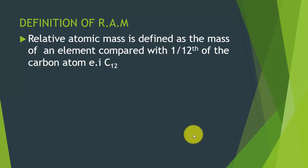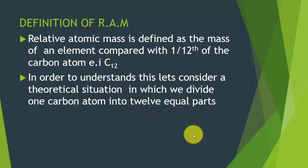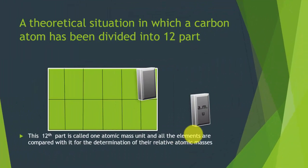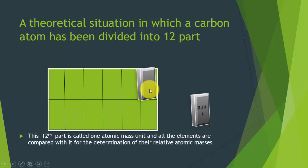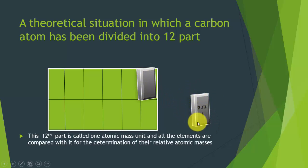In order to understand this, let's consider a theoretical situation in which we divide one carbon atom into 12 equal parts. Consider this the whole carbon atom — it has been divided into 12 equal parts. This 12th part is called the atomic mass unit, and all the elements are compared with it for the determination of their relative atomic masses.